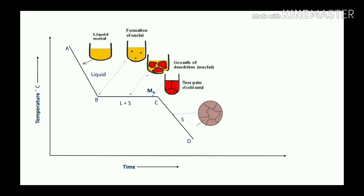If the material has finer grains and more grain boundaries, then that material will have good characteristics. However, in the case of a pure metal, at point B there is a difficulty in the formation of nuclei.